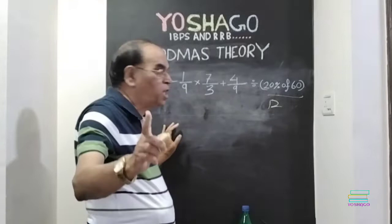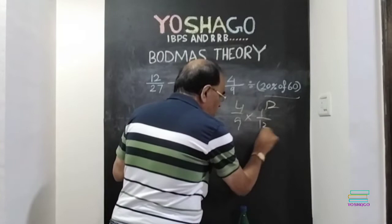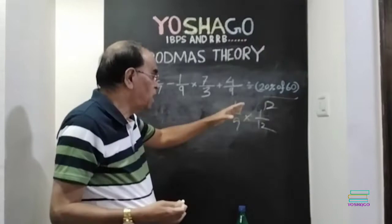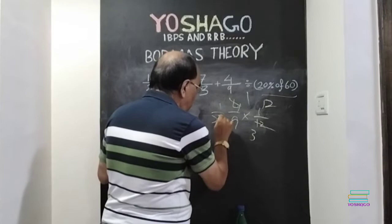Now, 4 by 9 divided by 12 means 4 by 9 into 1 by 12. Means, division is made reciprocal. Then numerator becomes denominator. Denominator becomes numerator. 4, 1, 4, 3, that is 1 by 27. That is, this we got now. 1 by 27.